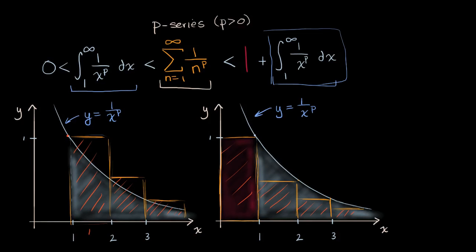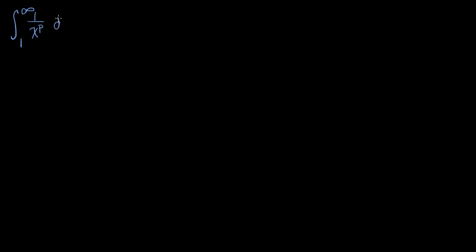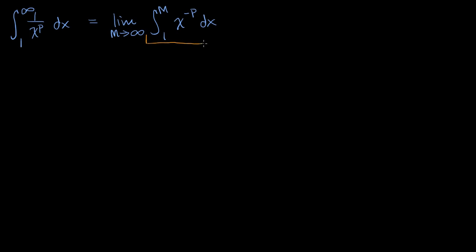So figuring out under what conditions — for what p — does the p-series converge is boiling down to under what conditions does this integral converge. Let's scroll down to think about what has to be true for that integral to converge. I'm going to rewrite it: the integral from one to infinity of one over x to the p dx. This is the limit as m approaches infinity — I'll use the variable m since we're already using n — of the integral from one to m of x to the negative p dx.